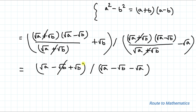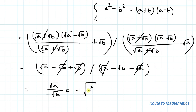Root b cancels out in the numerator and root a cancels out in the denominator. So we are left with root a divided by minus root b, which equals minus root of (a over b). That is our final answer. I hope you have understood the solution. Thanks for watching — please subscribe to my channel and hit the like button for more such interesting videos.